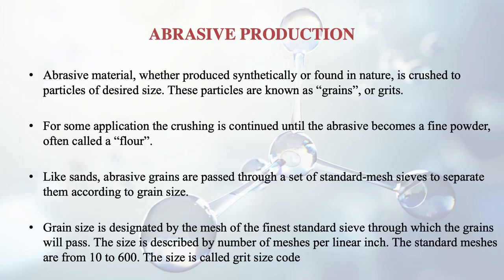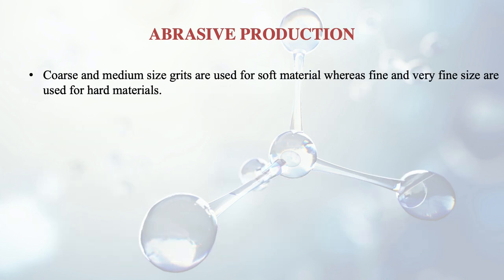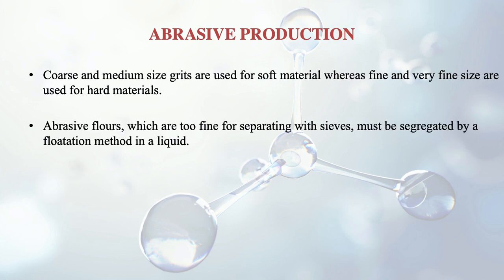Coarse and medium size grains are used for soft materials, while fine and very fine sizes are used for harder materials. Abrasive powders which are too fine for separating with sieves need to be segregated by a floatation method.